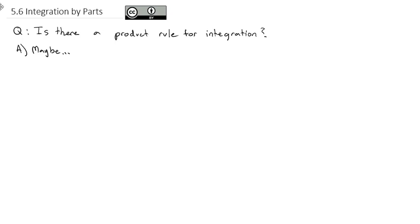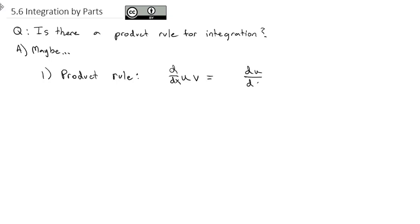You do remember that we have this thing called the product rule, which says if we take u times v and we want to know what its derivative is, that's going to be equal to the derivative of the first part, du/dx, times the second part, plus the derivative of the second part, dv/dx, times the first part, u.